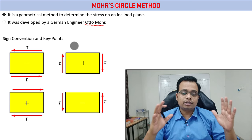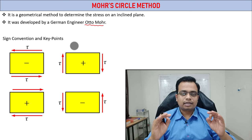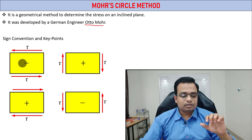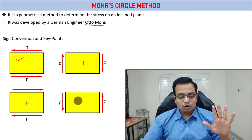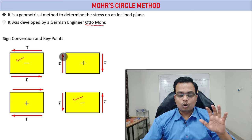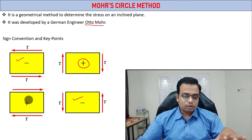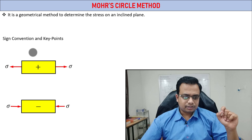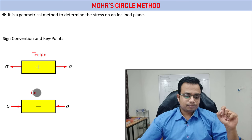Today's session is going to be very interesting. What you need to remember is the basic sign convention. If the nature of shear stress tries to rotate the object in the anti-clockwise sense, take it as negative. If it tries to rotate in the clockwise sense, take it as positive. For tensile stress, take that as positive, and for compressive stress, take that as negative.